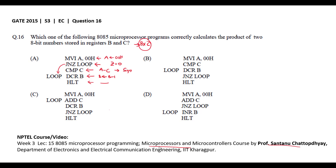If we assume Z flag is 1 after the MVI instruction, the program jumps directly to decrement B, so B is decremented by 1, and then the halt instruction is executed. In either case, there is no multiplication operation performed. So Option A is the wrong option.